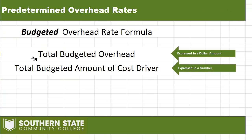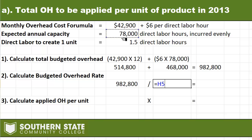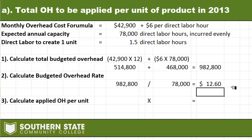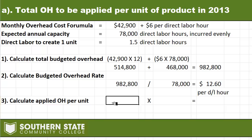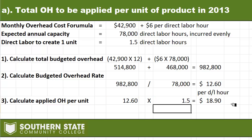Now we plug $982,800 into our formula as the numerator and put the budgeted cost driver amount — 78,000 direct labor hours — in the denominator. Dividing gives us $12.60 per direct labor hour. That's the overhead rate per direct labor hour. For part A's final answer, overhead per unit, we multiply $12.60 by one and a half direct labor hours per unit, giving us $18.90 per unit.